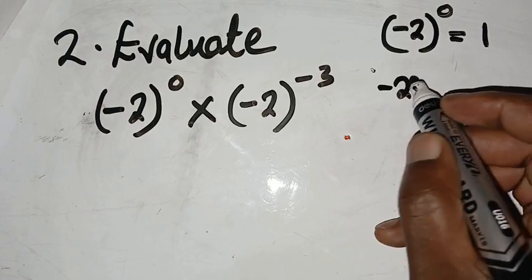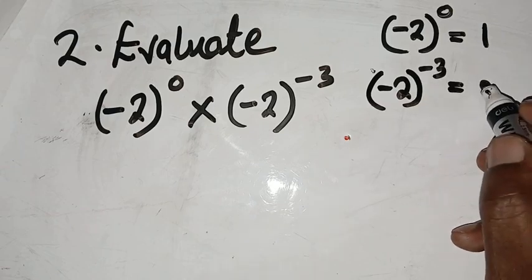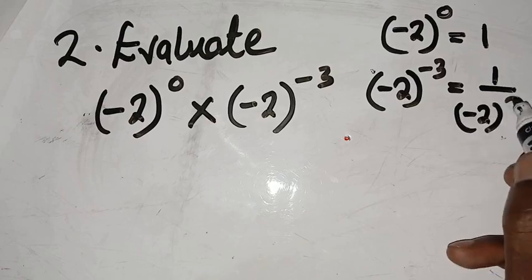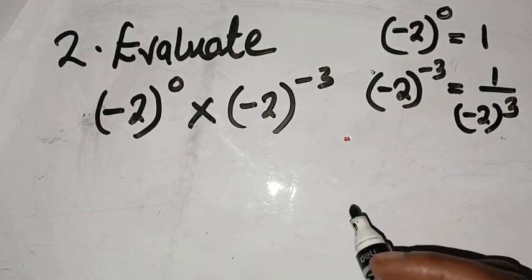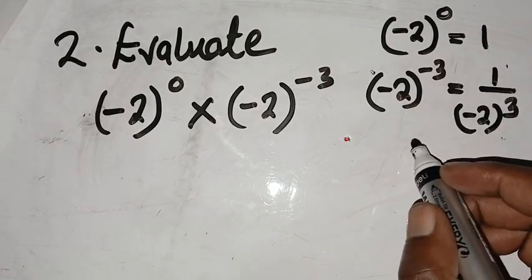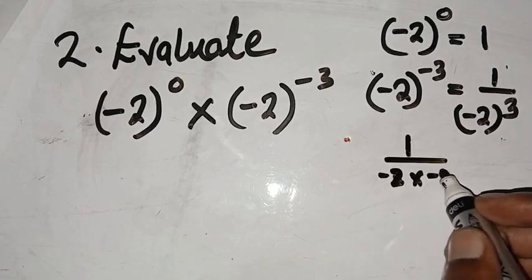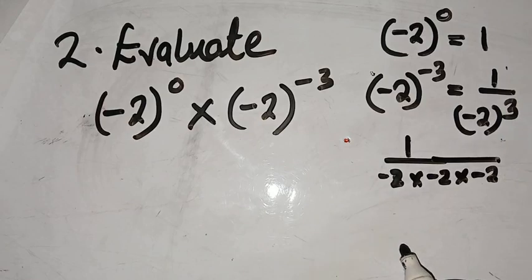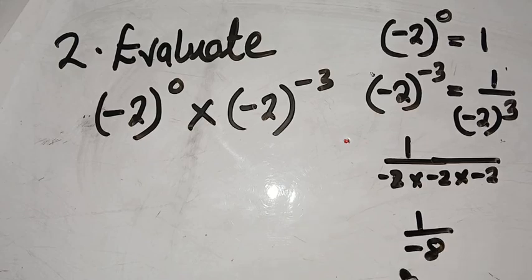Then we have minus 2 to the negative 3. Remember, we need to put a 1 over, so this becomes 1 over negative 2 cubed — that is, negative 2 multiplied by negative 2 multiplied by negative 2. Therefore we are going to end up with 1 over negative 8.